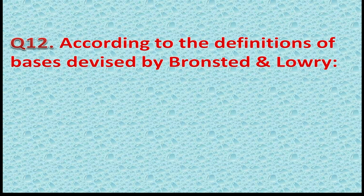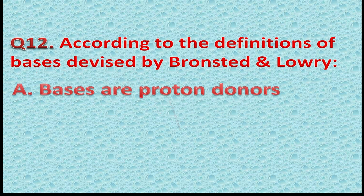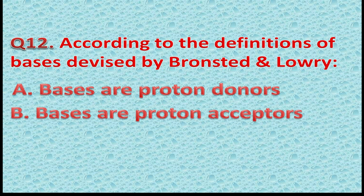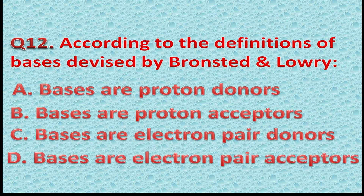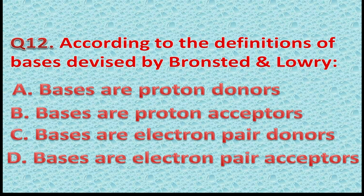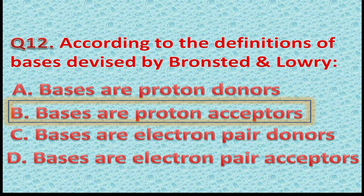Question 12: According to the definition of bases by Bronsted and Lowry — A: Bases are proton donors. B: Bases are proton acceptors. C: Bases are electron pair donors. D: Bases are electron pair acceptors. The correct answer is B — Bases are proton acceptors. You got one more point if you gave the correct answer.